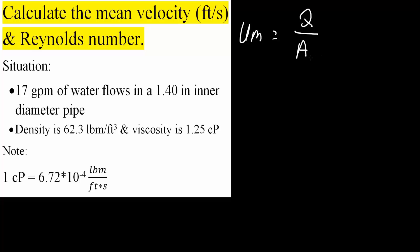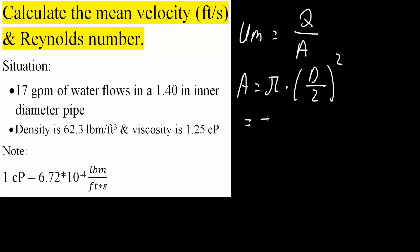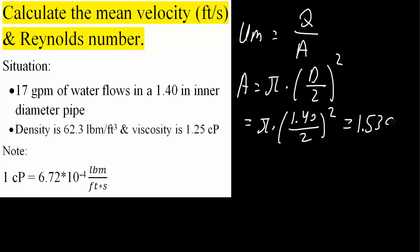First, we will calculate the cross-sectional area. A is equal to pi times (D/2)², where D is the inner diameter. In our case, we have pi times (1.40 inches / 2)², which gives us 1.539 inches squared. This is the cross-sectional area.